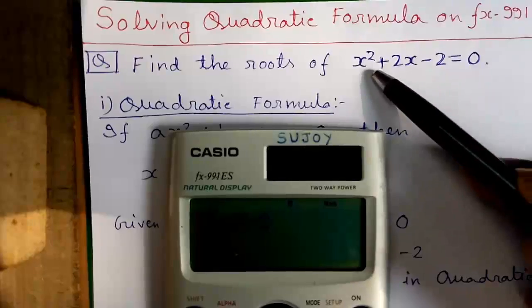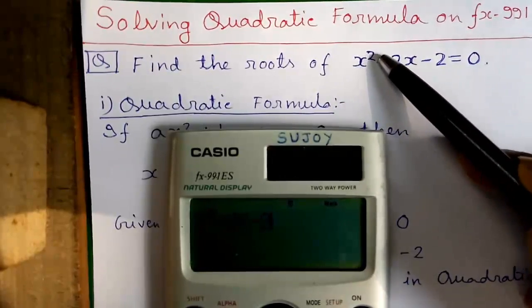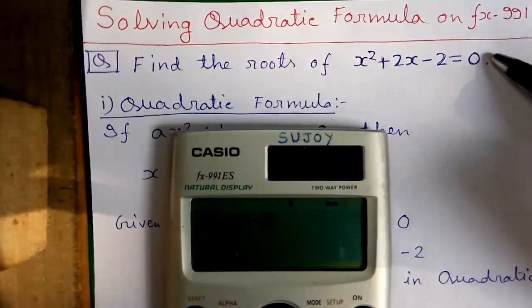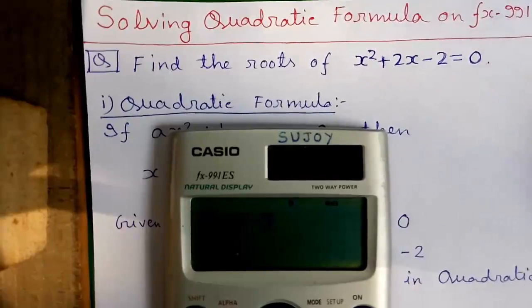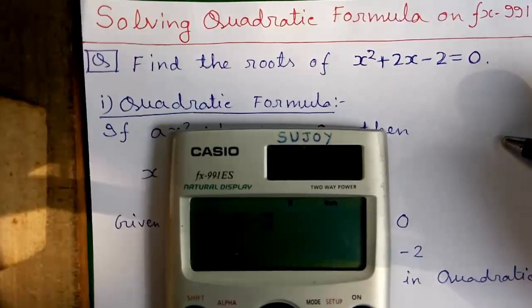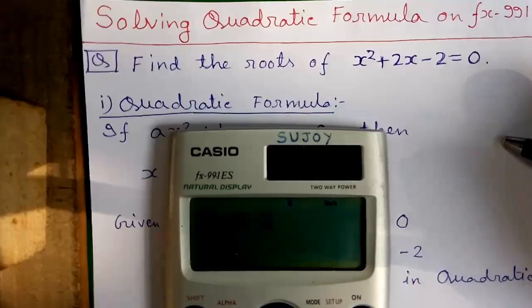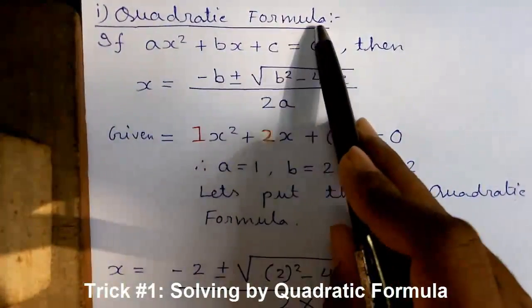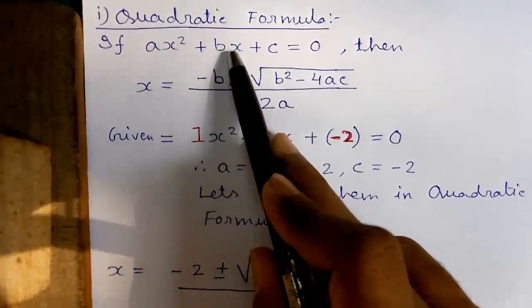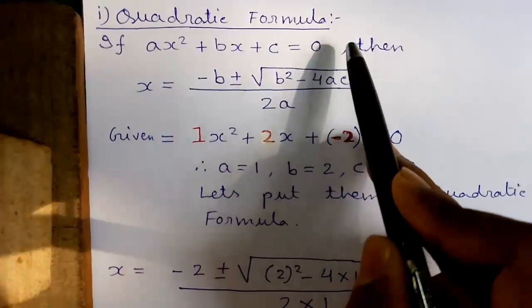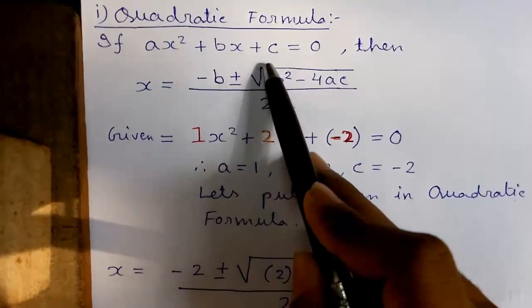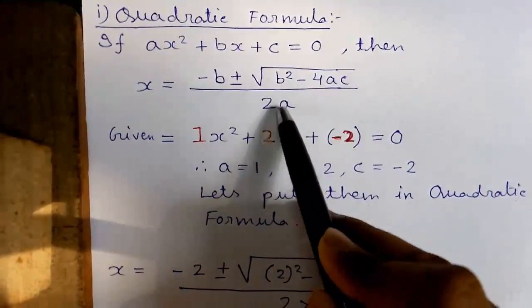Our first question is: find out the roots of x² + 2x - 2 = 0. This is a quadratic equation and you have to find out the roots. Being a quadratic equation it has two roots — one positive and one negative. We will solve it using the quadratic formula: if ax² + bx + c = 0, then x is given by (-b ± √(b² - 4ac)) / 2a.